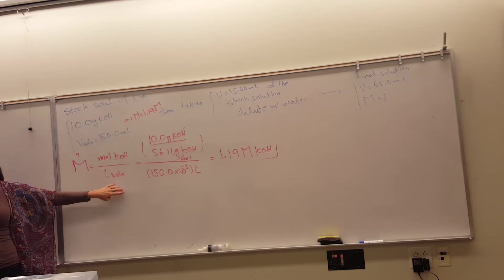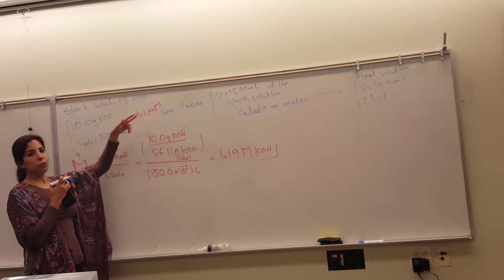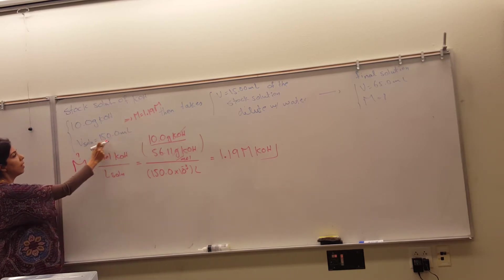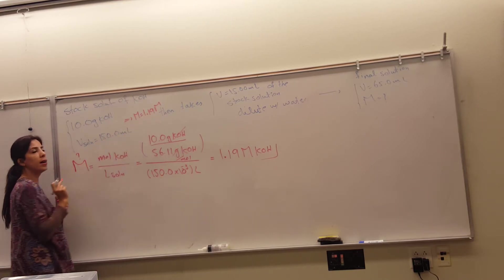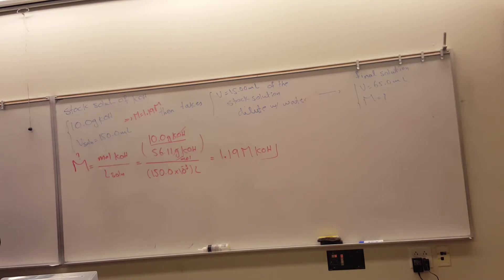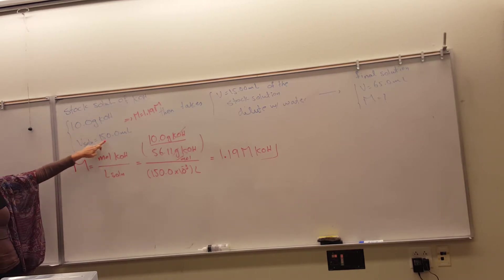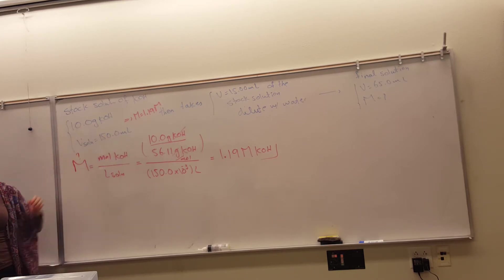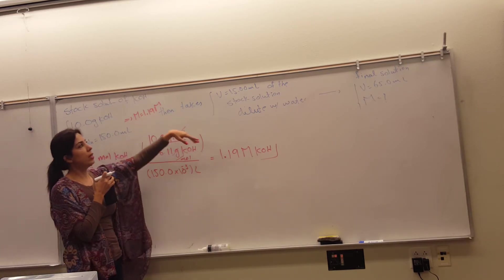Any questions so far? Is it clear how I found the molarity? Now we have 150 milliliters of 1.19 molar potassium hydroxide solution. A student asks why we use three significant figures — it's because 10 grams is two significant figures and 150 milliliters is three, and with division we use the least, so three significant figures gives us 1.19 molar.